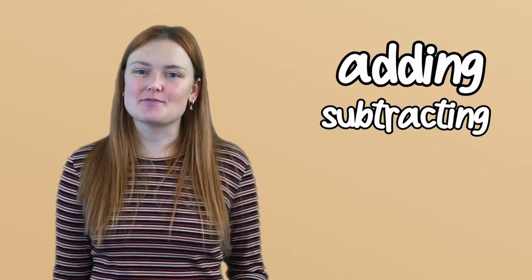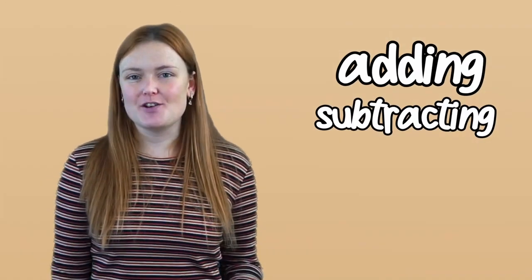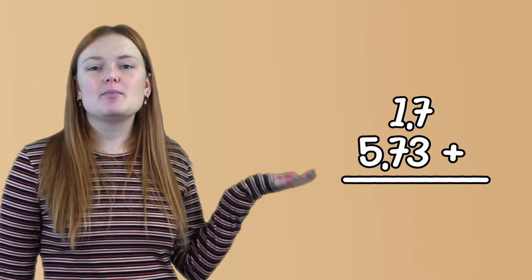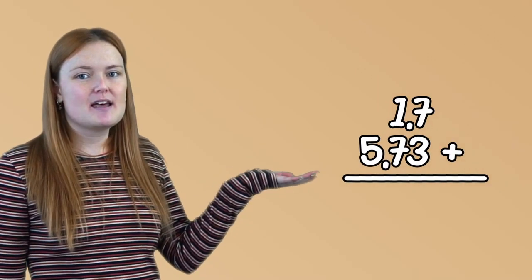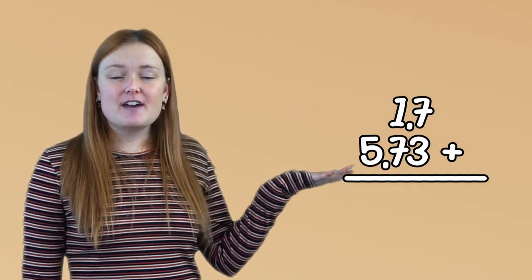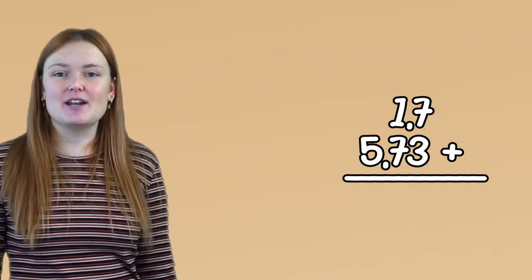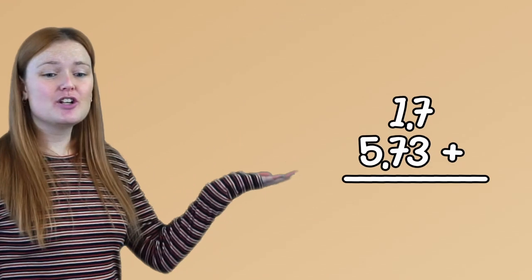So let's start with adding and subtracting. The important thing to do when you're adding and subtracting decimals is to line up the decimal point rather than the numbers. For example, I've got 1.7 plus 5.73. I'm not going to line it up like this because it won't work. The thing that I need to do is I need to line up the decimal point. So it should look like this.